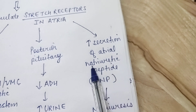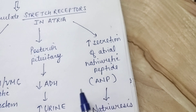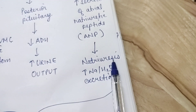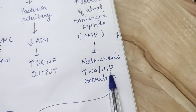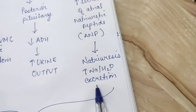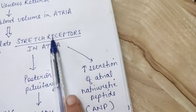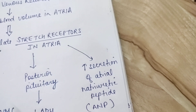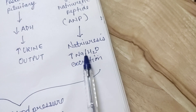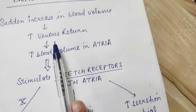The same decrease in blood volume can also be achieved via ANP — atrial natriuretic peptides. These are secreted from the atria and they cause natriuresis, which is basically sodium excretion. Since water follows sodium, there is an increase in sodium and water excretion from the body whenever the atrial stretch receptors are stimulated and ANP increases.